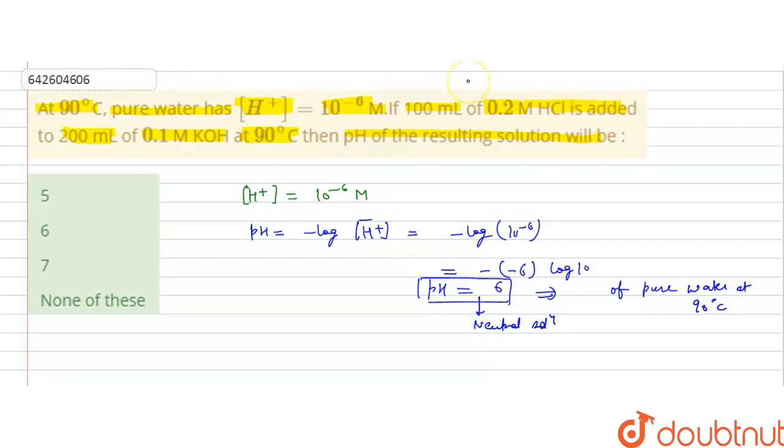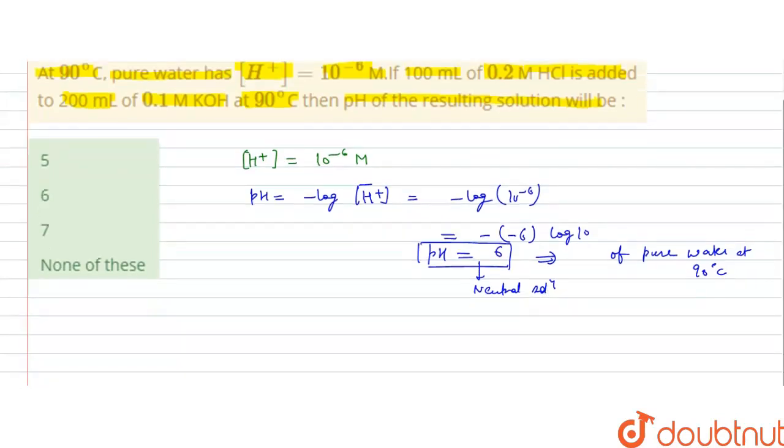If we added the 0.2 molar HCl solution of 100 ml in 200 ml of 0.1 molar KOH, then neutralization will take place because KOH will give the OH minus ion and HCl give H plus ions. So neutralization will take place. First we will calculate the milliequivalents of HCl.